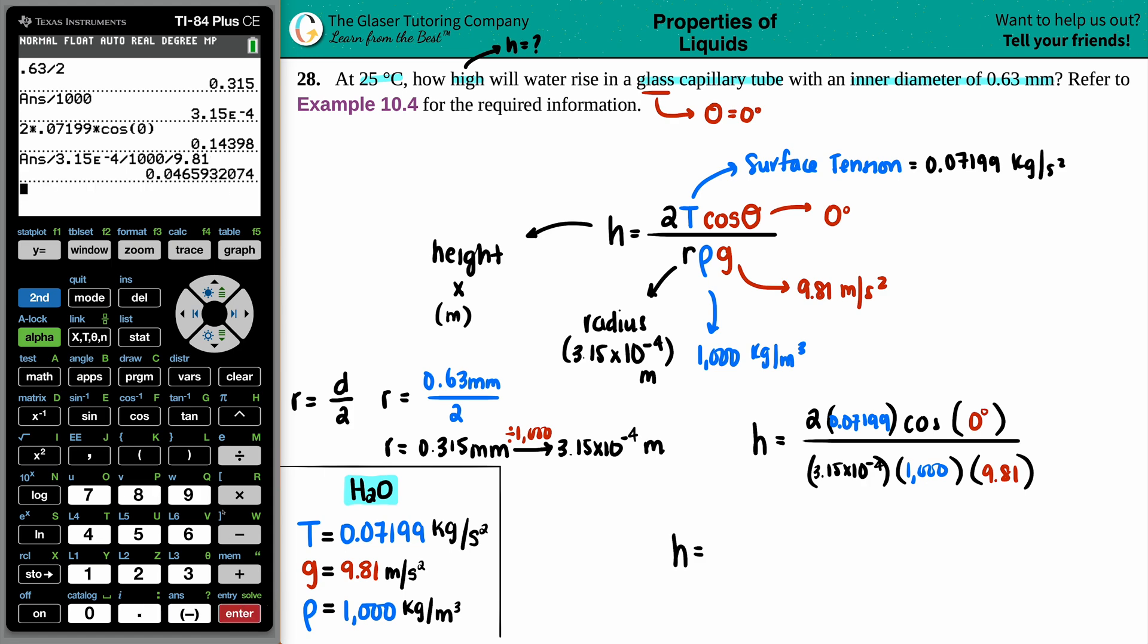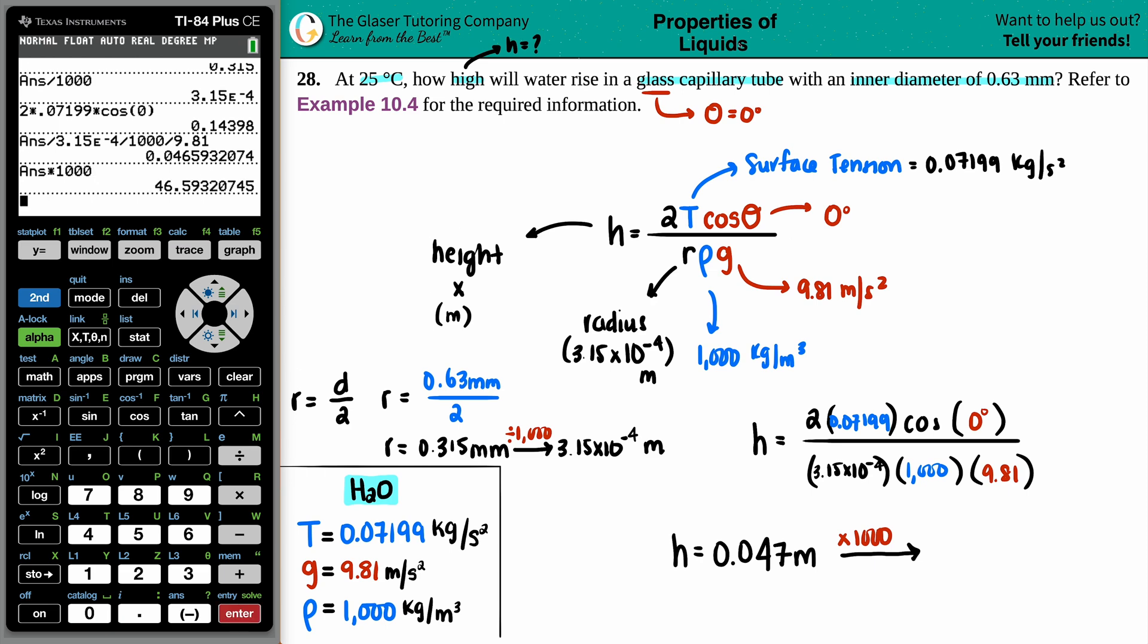Now it seems like two sig figs because of the diameter, so I'm going to give out two sig figs: 0.047, and this is in meters. If you want to switch it to millimeters, all you got to do is just times by a thousand. So just take this number times by one thousand or just move the decimal over three times to the right, and you get 47 millimeters. And that is your final answer.